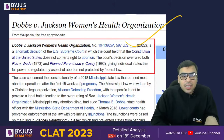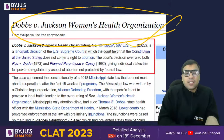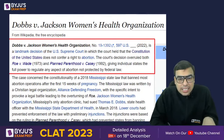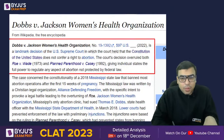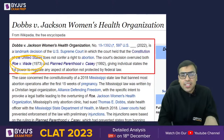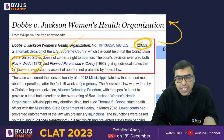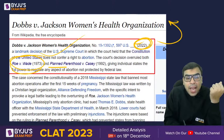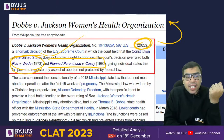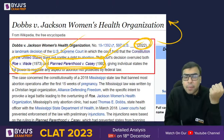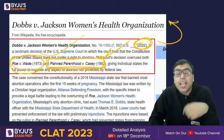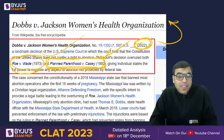Dobbs v. Jackson Women's Health Organization case overturned Roe v. Wade. The 1973 Roe v. Wade case and the 2022 Dobbs case — just have an idea. Homework: also go and read the Planned Parenthood v. Casey case, 1992 — just a few lines on Wikipedia. They can ask questions on that too.